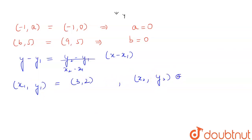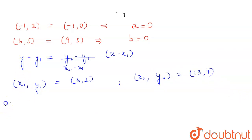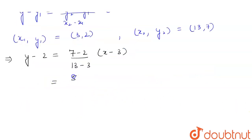So if we put these values in the equation we see that we will get y - 2 = (7 - 2)/(13 - 3) × (x - 3), which will be equal to 5/10 × (x - 3). This will cancel out and become 1/2.